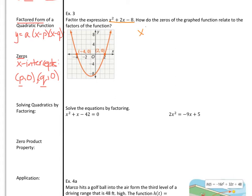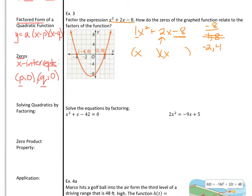Starting with x squared plus 2x minus 8, we're asked to factor. The coefficient in front of x squared isn't written, so it defaults to 1. When the coefficient is 1, all we need to do is split the c value to get the b value on the inside. What are factors that go into negative 8? We could do 1 and 8, or 2 and 4. We need them to multiply to get negative 8 and add to get positive 2. Making the 2 negative and keeping the 4 positive gives a product of negative 8 and a sum of positive 2. We split x squared into x times x, then put minus 2 in one location and plus 4 in the other.